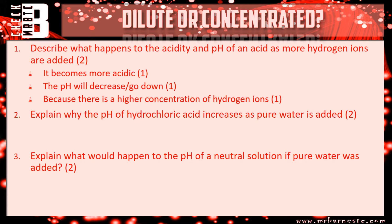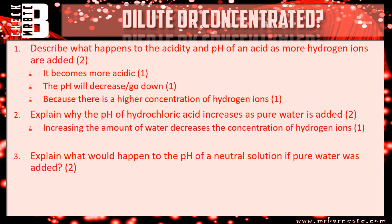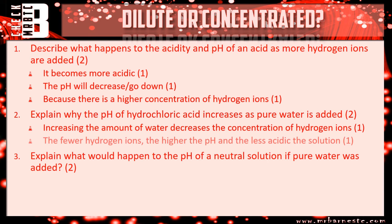Question two: explain why the pH of hydrochloric acid increases as pure water is added. If you increase the amount of water, there's a lower concentration of hydrogen ions — there's more water and fewer hydrogen ions in the same area. If there are fewer hydrogen ions, the pH is higher and the solution is less acidic.